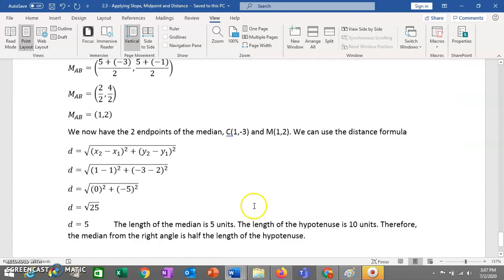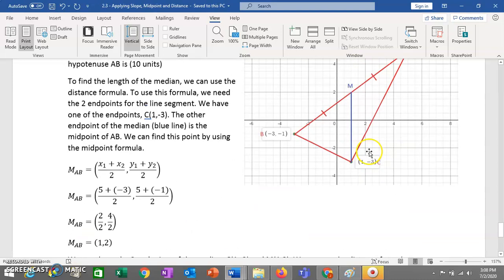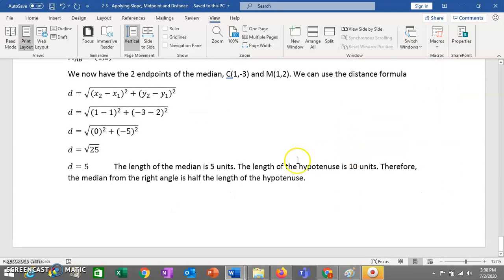So now you have this midpoint for the hypotenuse is actually the endpoint of the blue line. You have your two endpoints. You plug them into the formula. And it turns out that when you do that, you get a distance of 5. So that tells you that the length of this blue line is 5. And we already said from the previous question, we know that the length of the red line is 10. So yes, we have proven that this median has a length that is half of the hypotenuse.